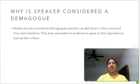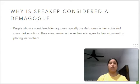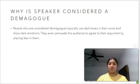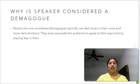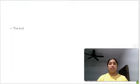Why is a speaker considered a demagogue? People who are considered demagogues typically use dark tones in their voice, and they also show dark emotions and dark facial expressions to scare away the audience. They even persuade the audience to agree to their argument by placing fear in them.